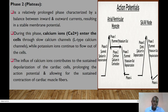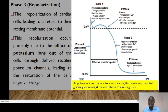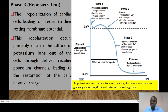Phase 3 is all about repolarization of cardiac muscles, leading to a return to the resting membrane potential. This repolarization occurs primarily due to the efflux of potassium ions out of the cell through the late rectifier potassium channels, restoring the cells' negative charge.